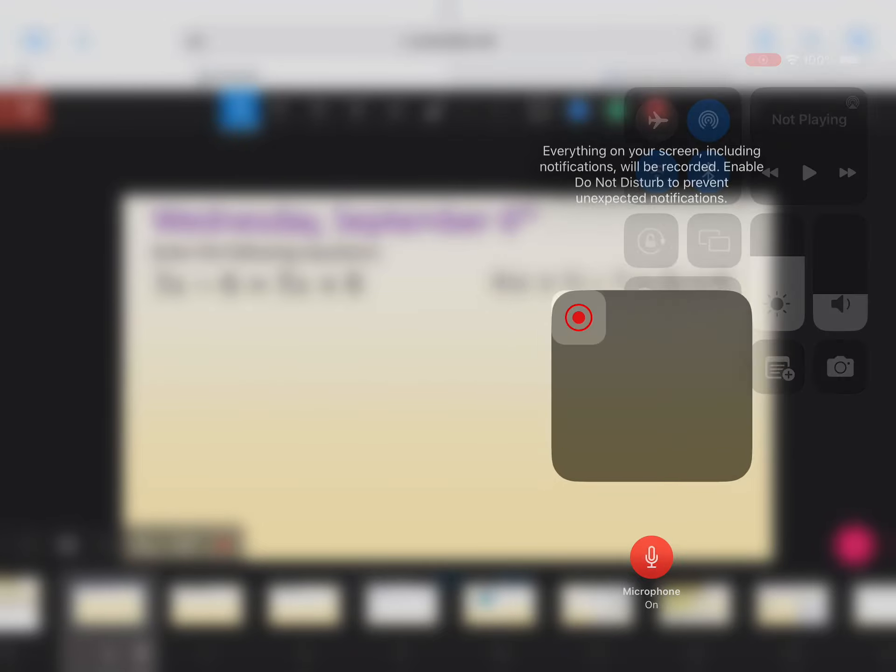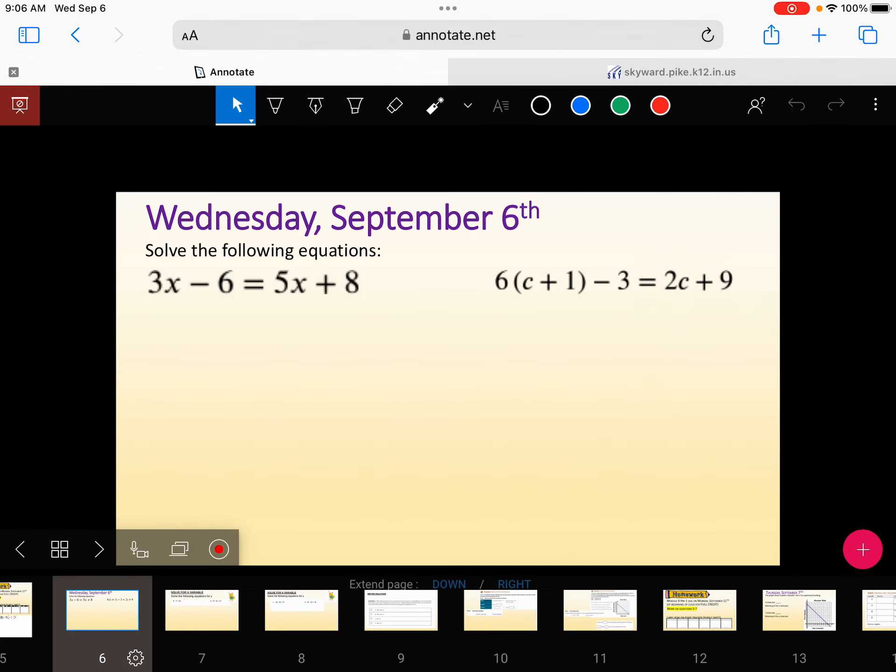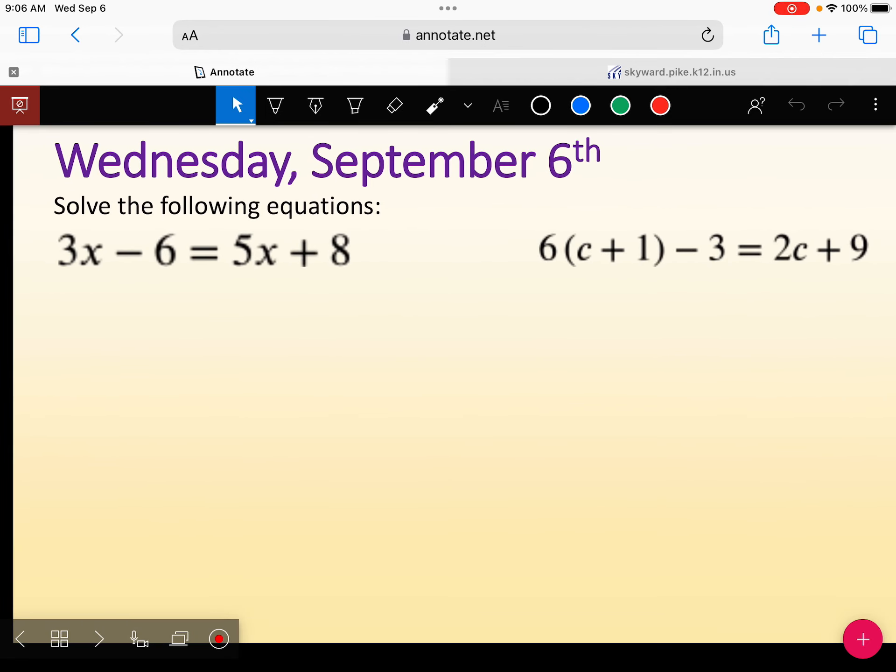Alright, so your first step, you want to bring all your x's together. So you could subtract the 3x and pull that over, or you can subtract 5x. It really doesn't matter. Who subtracted 3x first? Okay, so let's go ahead and do that. We're going to subtract our 3x's over.